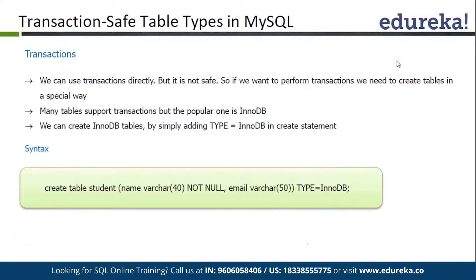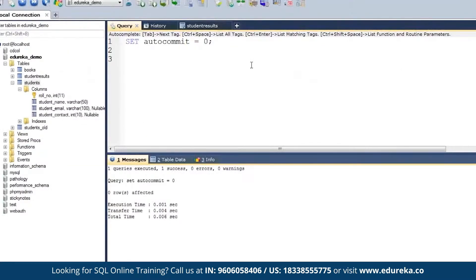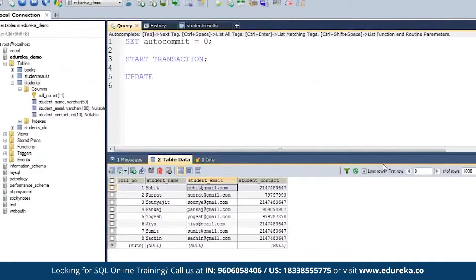Let's see what auto commit does. We can set it like this: SET auto_commit = 0. In order to work with transactions manually, we keep auto commit equal to 0. Now I will do SET auto_commit = 0 and then I will do an UPDATE on the students table. I am having a students table with these records.